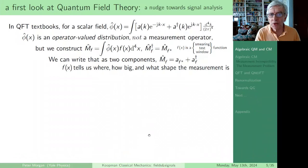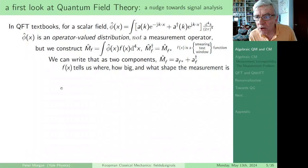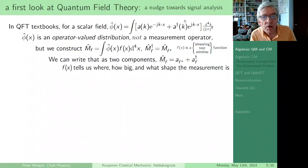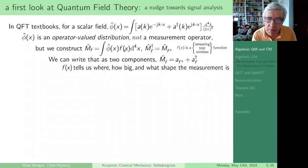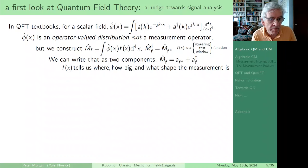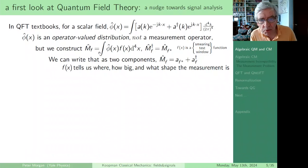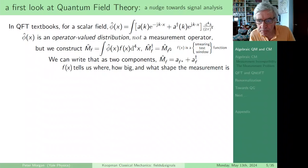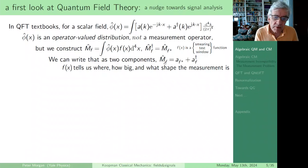Now I'm going to take a first look at quantum field theory — just one slide — and nudge ourselves towards signal analysis. If you look at quantum field textbooks for a scalar field, you find this expression early on, where φ(x) is an operator-valued distribution — it's not a measurement operator. But we can construct an F-measurement by doing what's called smearing the operator-valued distribution with a test function. Because it's used to smear, it's also called a smearing function, but in signal analysis a very similar idea is called a window function, because it tells us how we're looking at the world. The adjoint of an F-measurement is an F*-measurement. We can write this as two components: an F-measurement is the sum of an F* lowering operator and an F raising operator. F(x) tells us where, how big, and what shape the measurement is.